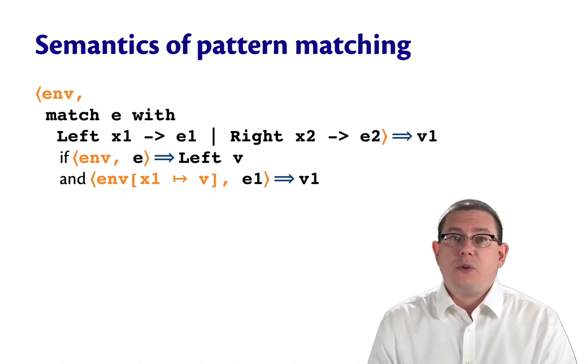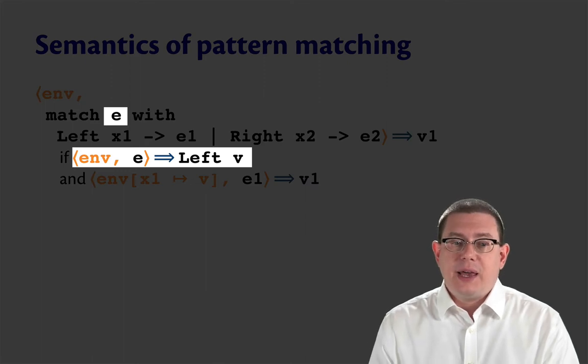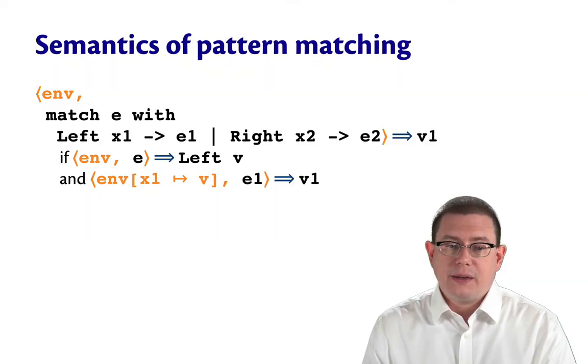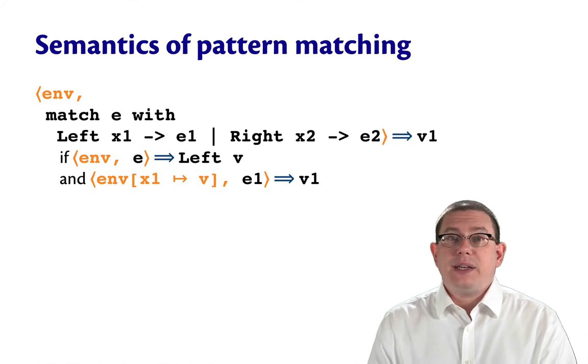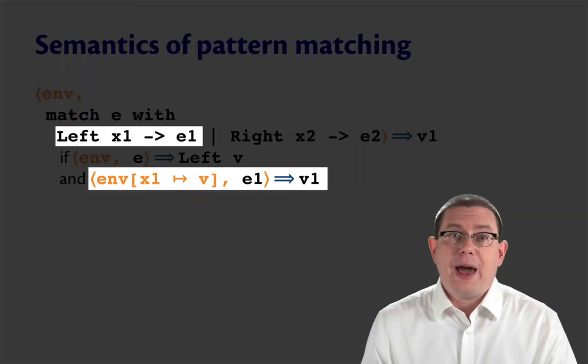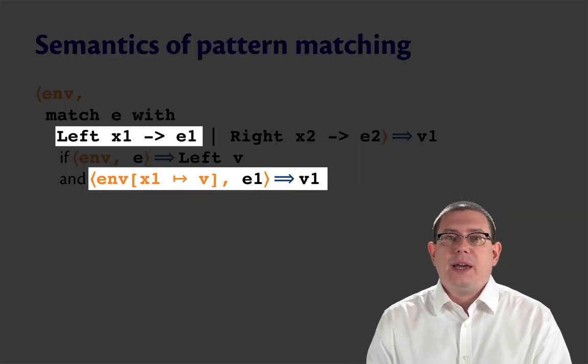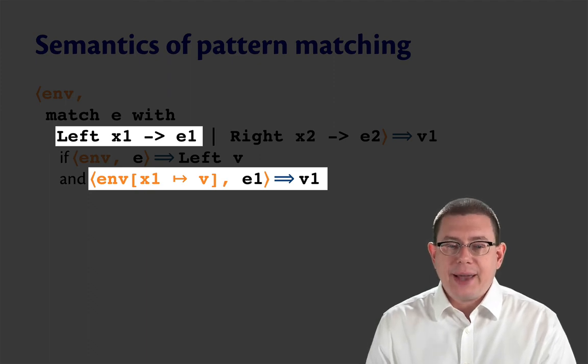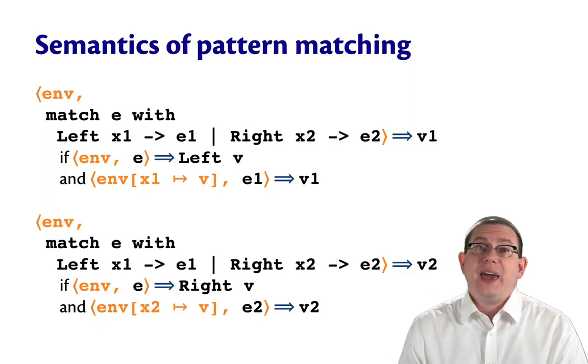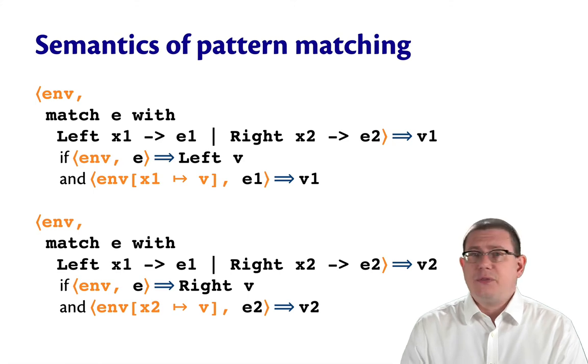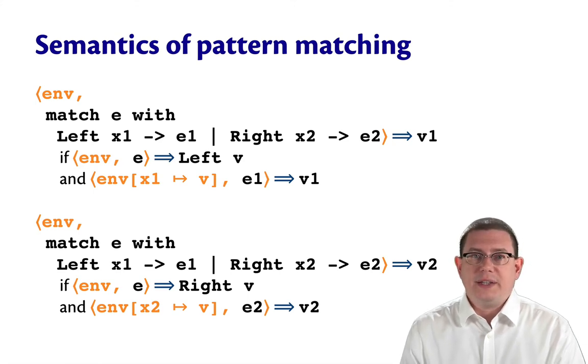So here, if we're matching E, and E evaluates to the value left V, then when we evaluate E1, because we should match against left here, we're going to extend the environment to map X1 to V. And it would be the same symmetrically if we were evaluating a right pattern.